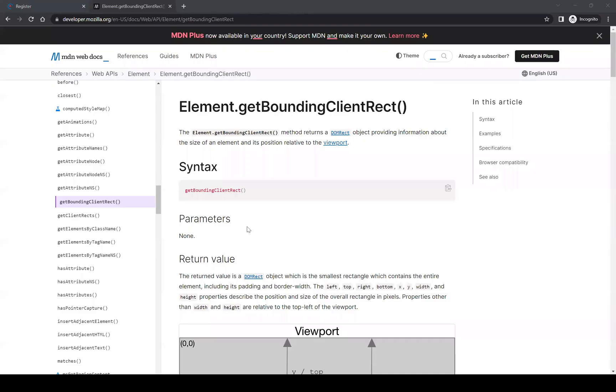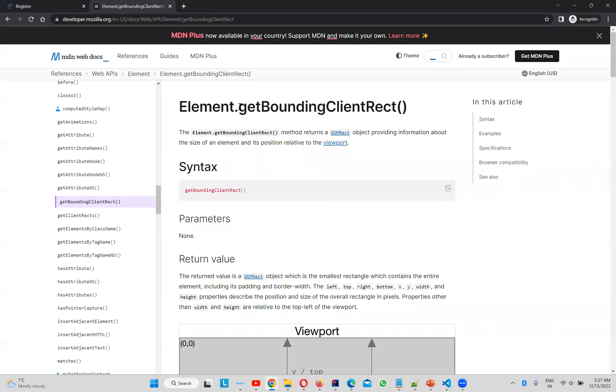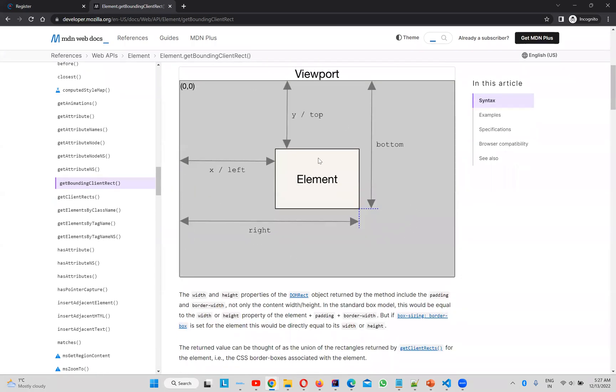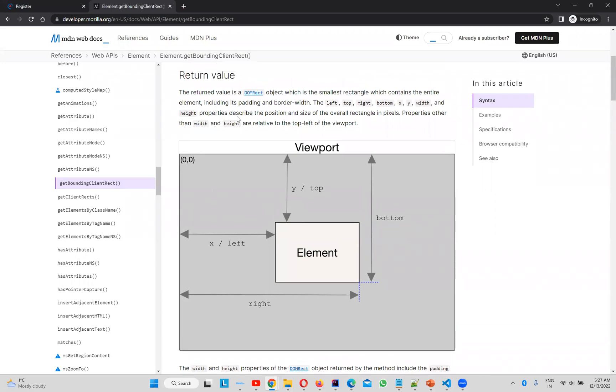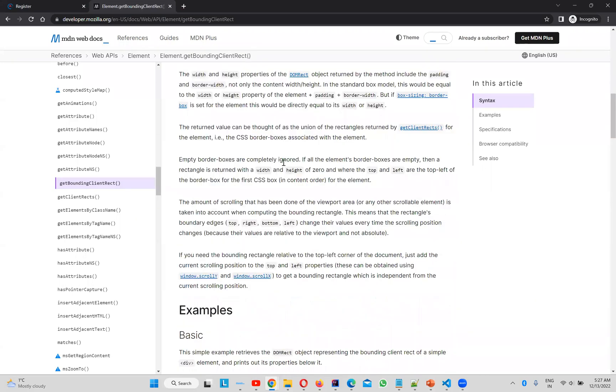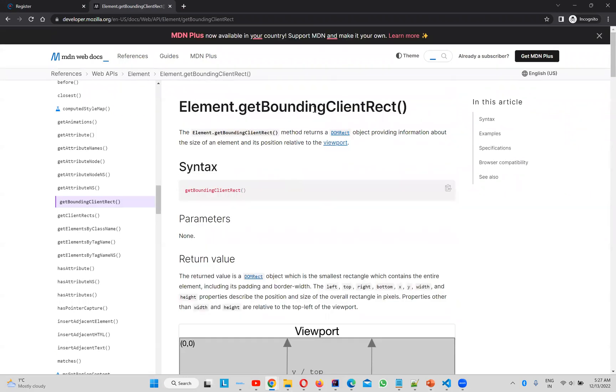If you go there, you see that element.getBoundingClientRect() method returns a DOMRect object providing information about the size of an element and its position relative to the viewport. You see this is the element - this is the left, this is the top, bottom, right. If you want to get more information on this, just go through this link to get a better understanding of how getBoundingClientRect() will work.